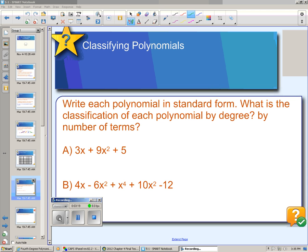Example A, in standard form, we would line them up according to their exponents. So 9x² would go first, and then the linear term, and then the constant term.